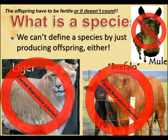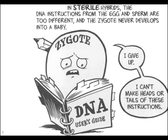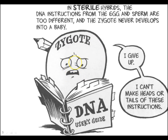The offspring of the cross have to be fertile, or it doesn't count. When you have these zygotes — these fertilized eggs of two different species — the instructions from the eggs and sperm are too different. The zygote never develops into a baby; it doesn't know what to do, never develops, and spontaneously aborts.